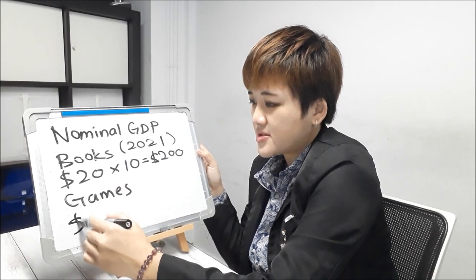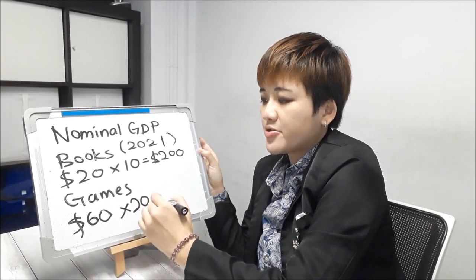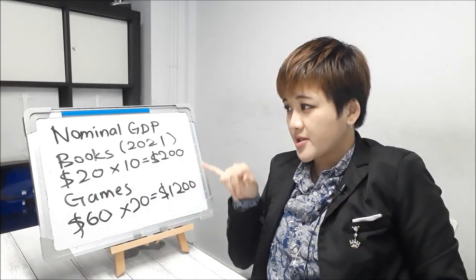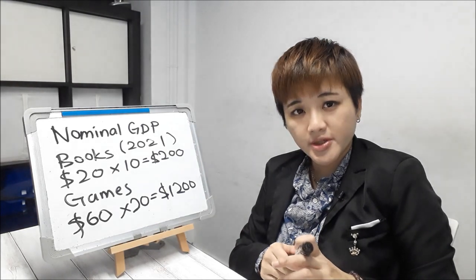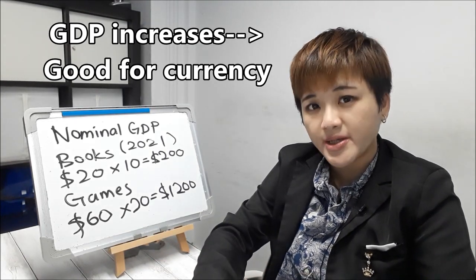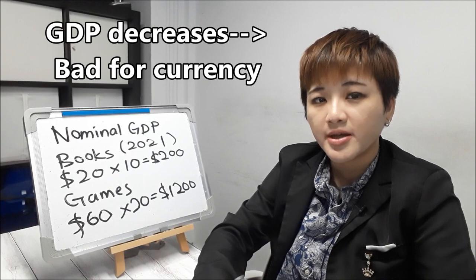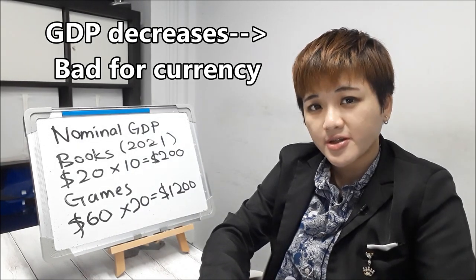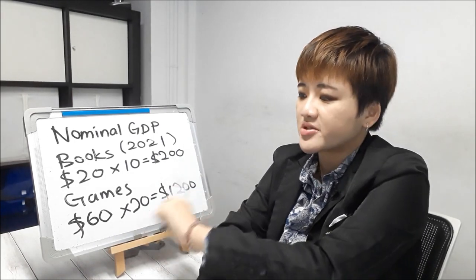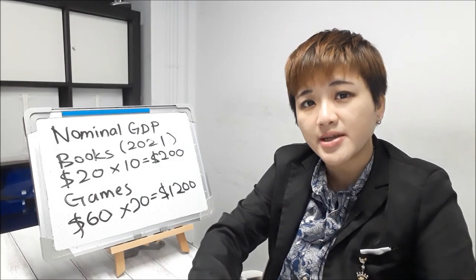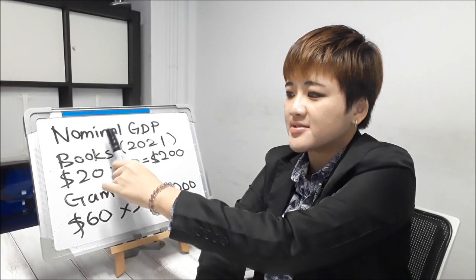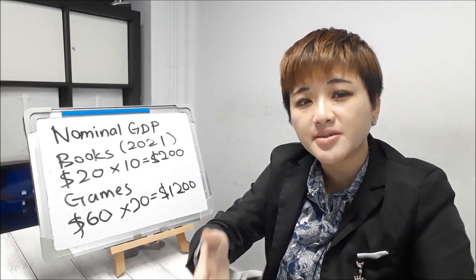Let's say they increase the price to $60. But the amount produced remains the same. The total nominal GDP becomes $1,400. Now, as a general guideline, when GDP goes up, it is good for the economy and hence good for the currency. When GDP goes down, it is bad for the economy and hence bad for the currency. So if GDP goes up just because of an increase in prices, does this mean that the economic condition improves? No. So there's a problem with nominal GDP because it is not adjusted for inflation — the increase in prices.